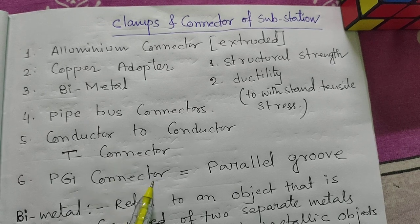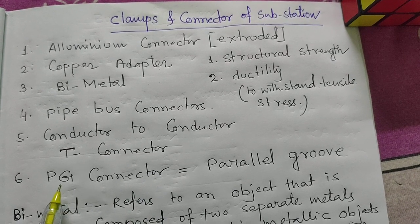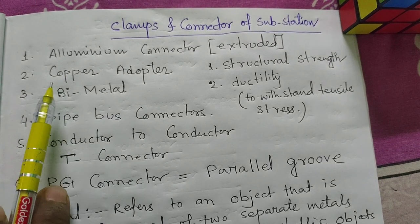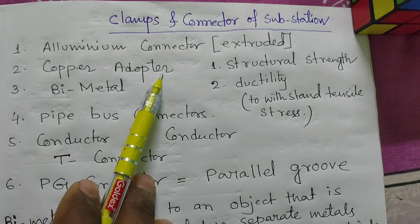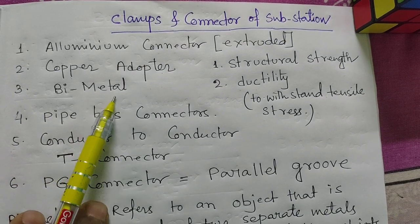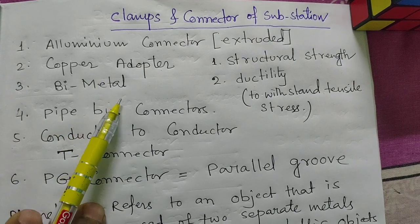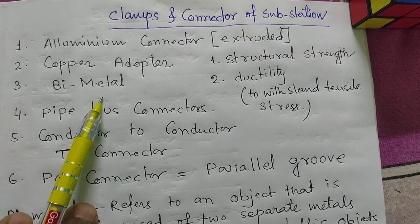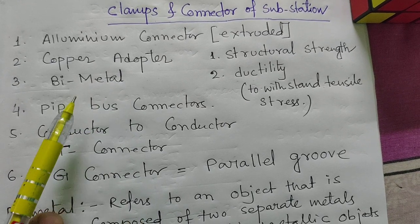The connectors we use include copper adapters, bimetals, pipe bus connectors, conductor-to-conductor connectors, T connectors, and PG connectors. The full form of PG is Parallel Group connectors. Copper adapters are being used at 33 kV substations, and bimetals are used at 132 kV, 220 kV, 400 kV, and 33 kV levels.